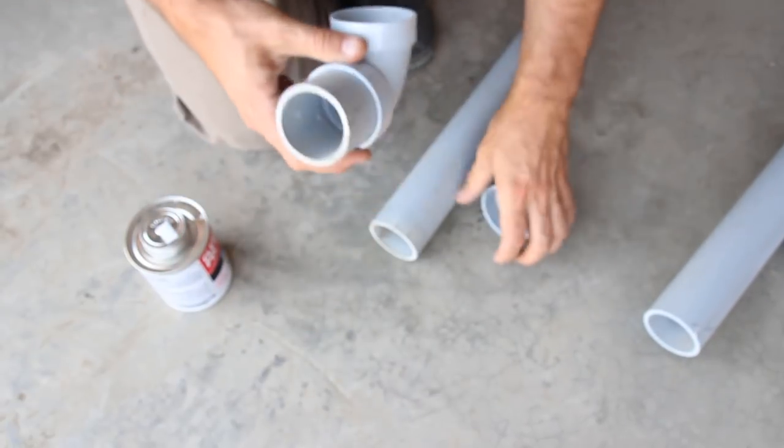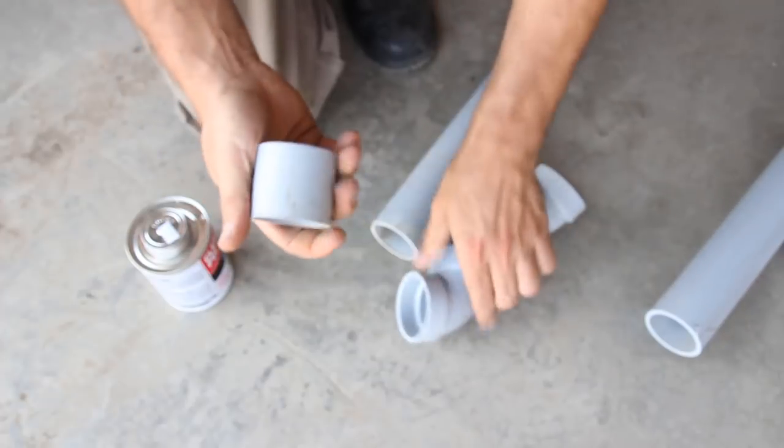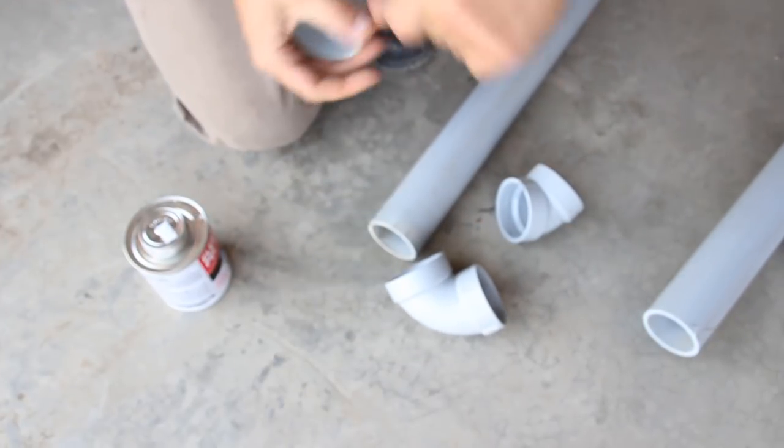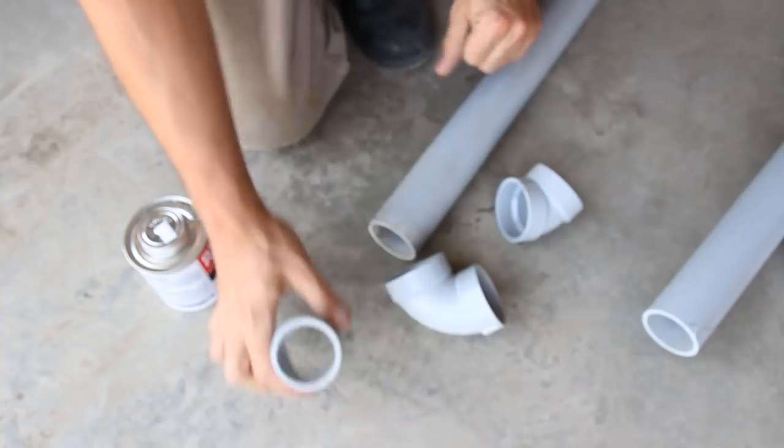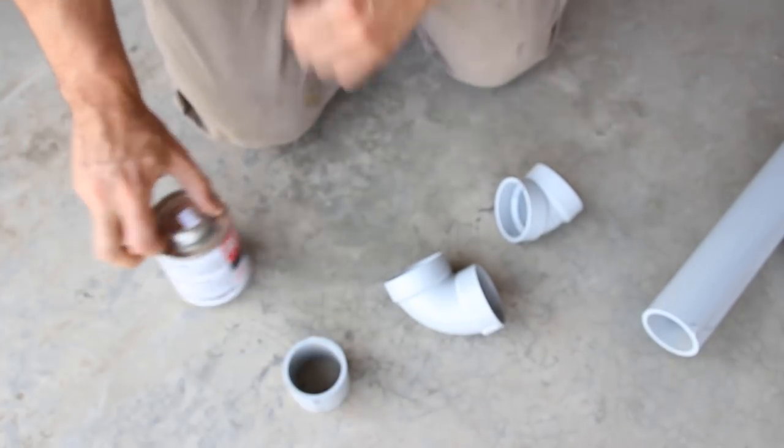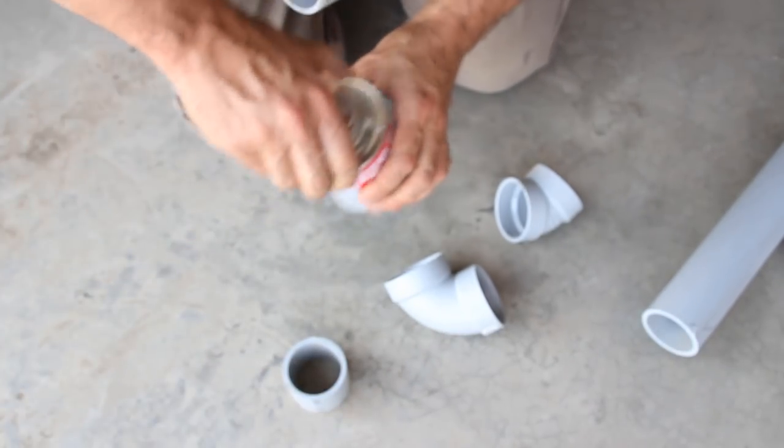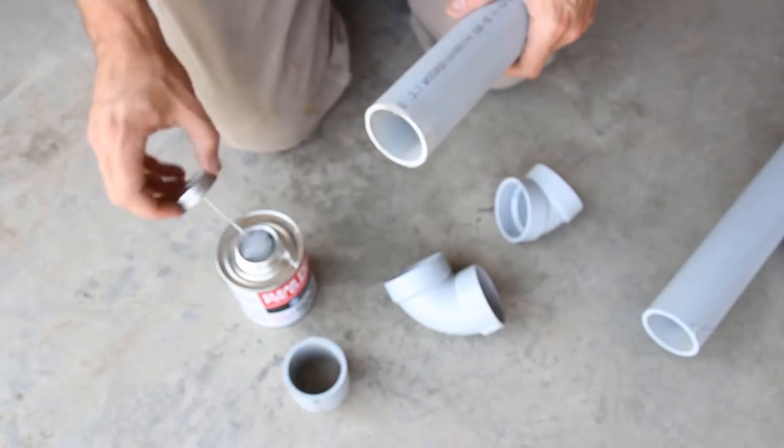So I want to make sure your PVC is clean when you're gluing all this stuff together. Sometimes I'll even sand it if it's really dirty. So the first thing we're going to do is get some PVC glue.